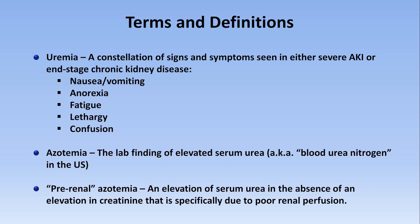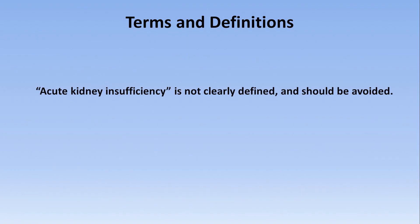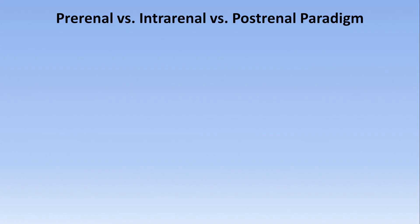I'll talk about why pre-renal azotemia happens in the next video. One final term is acute kidney insufficiency, which confusingly is also abbreviated AKI. This term is not clearly defined and its use should be avoided. Etiologies of acute kidney injury are classically divided into three categories based largely on anatomy. AKI can occur from a problem primarily within the kidney itself — this is called intrarenal AKI.